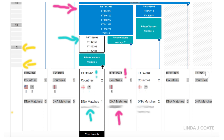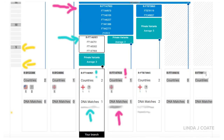Now look at the column highlighted with a bright pink arrow. That column goes up and shows that the first place we match is RFT147933. That represents an ancestor that is, according to the left-hand column, almost 15 SNPs or variations back in time.